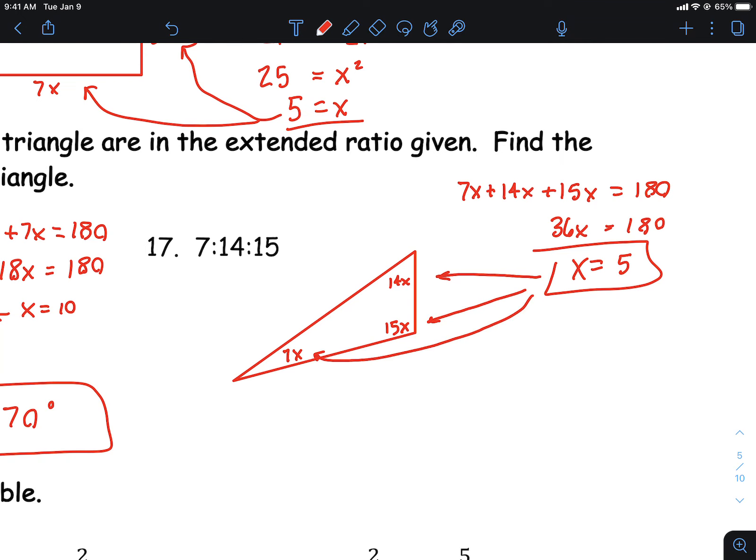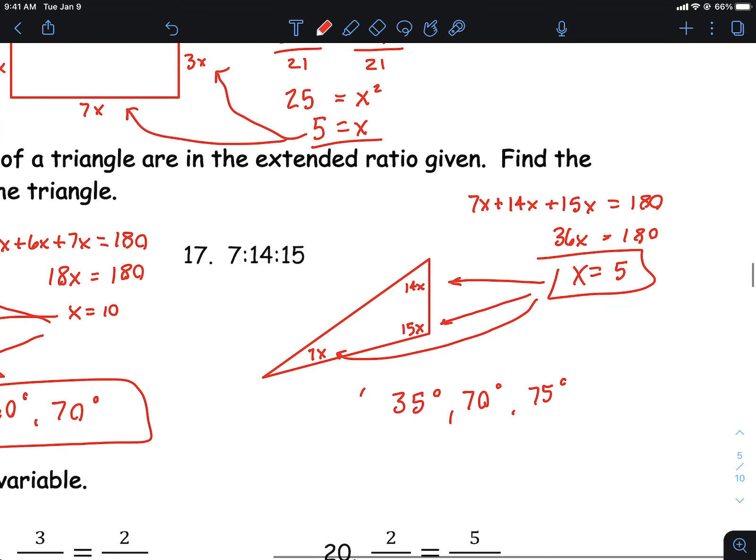Let's see here. 7 times 5 right there, that would be 35 degrees. 14 times 5, 70 degrees. And then I think the last one will be 75 degrees right there. So that'll be it there on those.